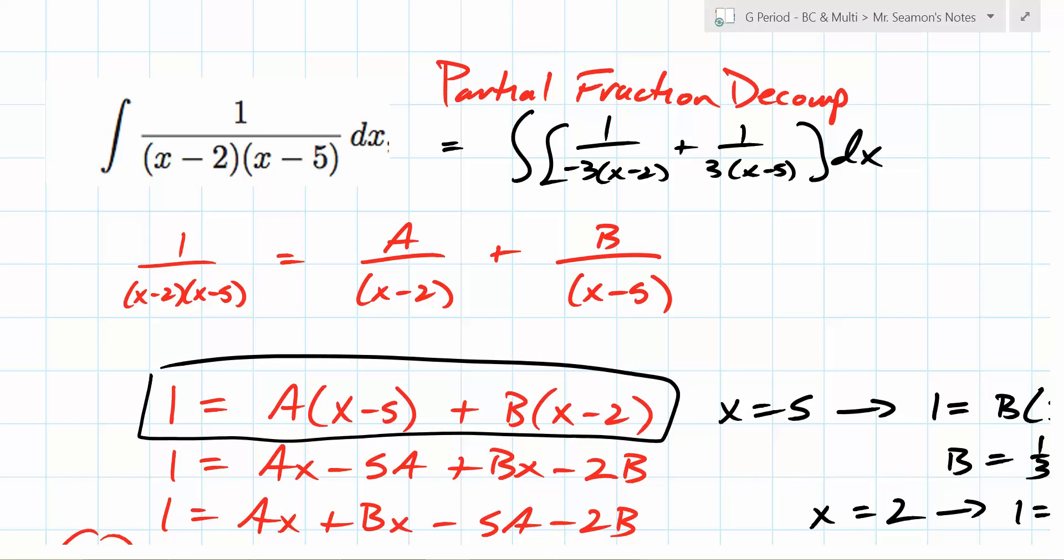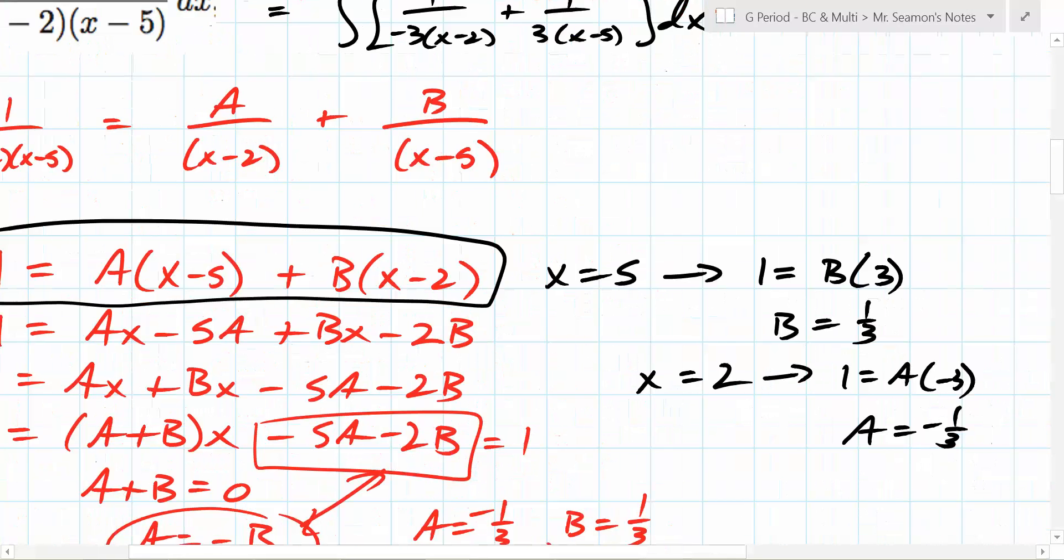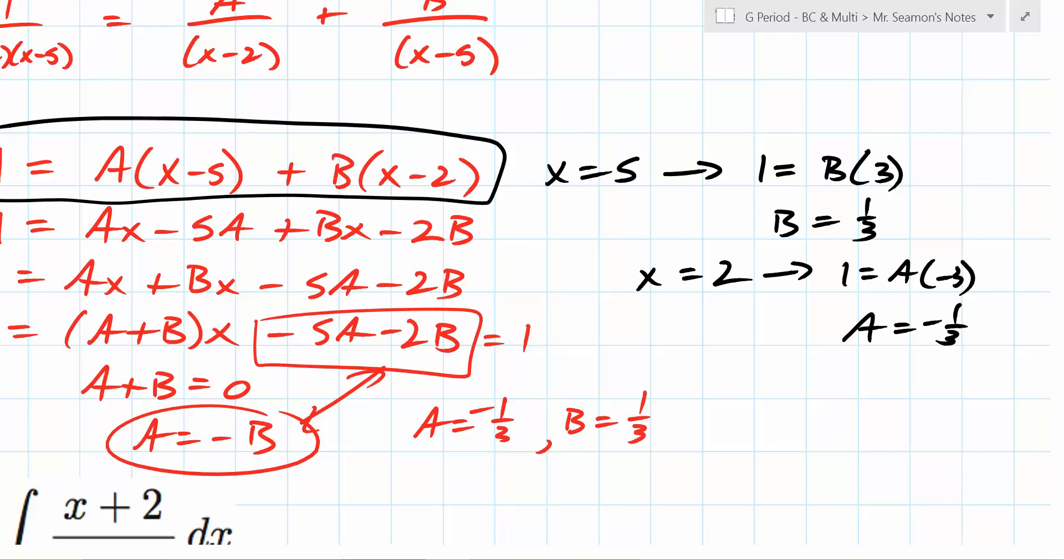You can pick magic values that get rid of the entire term. Here's why it's kind of cheating. Look at the original equation. Can you plug in 2 and 5? No, they're not in the domain. So I haven't reconciled this inconsistency, but this works every single time. I haven't reconciled this inconsistency.